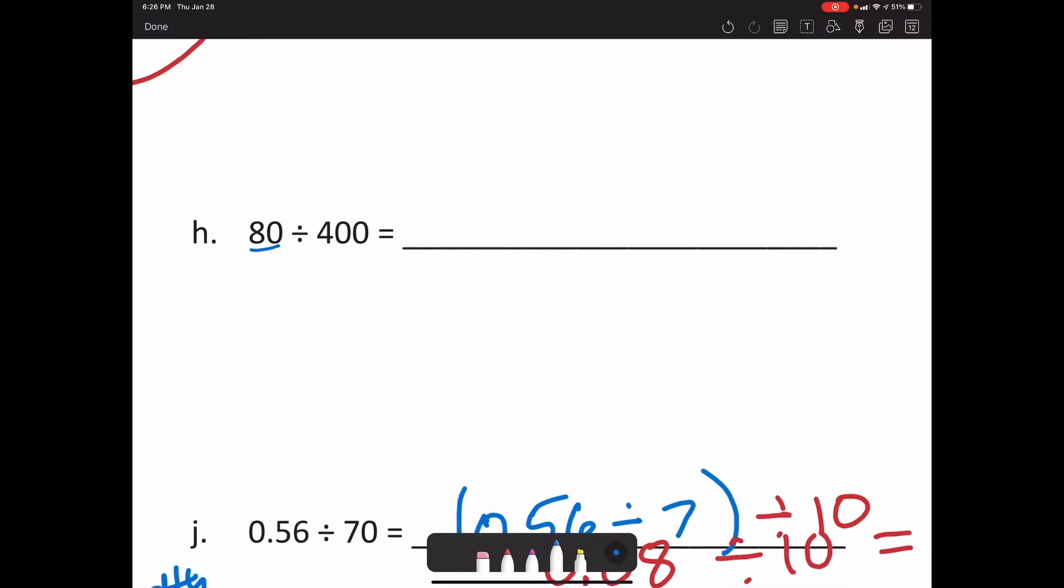and we're going to say that's 8 of something. So it's 8 tens is what it is. And we're going to divide that by 4. And that's how we're going to get that basic fact.